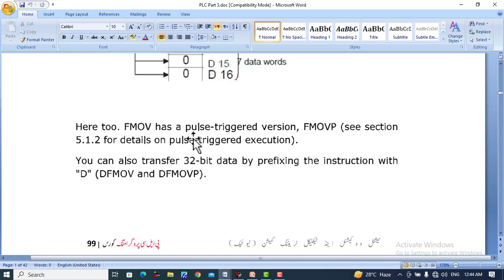FMOV also has a pulse triggered version FMOVP. When we use FMOVP it will work on the rising edge of the input pulse. And you can also transfer 32 bit data by prefixing the instruction with double word D: FMOV, DFMOV, and DFMOVP.